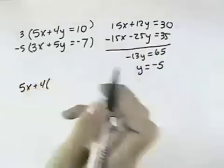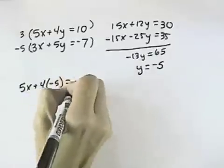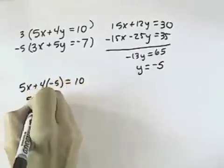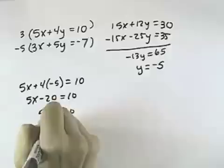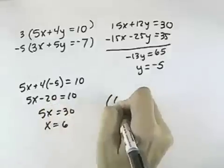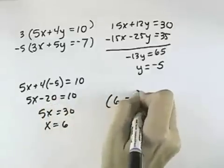Going back to either of my original equations, I can substitute the negative 5 in for y to solve for x. So that I have 5x minus 20 equals 10, 5x equals 30, and x equals 6. So that my solution set is 6, negative 5, the one ordered pair.